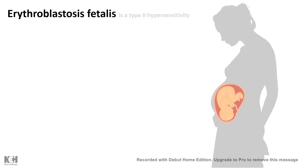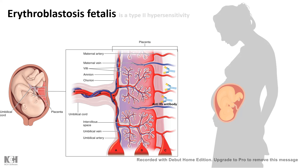The same type 2 hypersensitivity situation occurs during erythroblastosis fetalis, which is a fetal hemolysis problem. In this situation, the mother's body produces anti-RH antibodies. These antibodies can move through the placenta, enter the embryo, and cause hemolysis and eventually death of the embryo. These are the bad consequences of type 2 hypersensitivity.